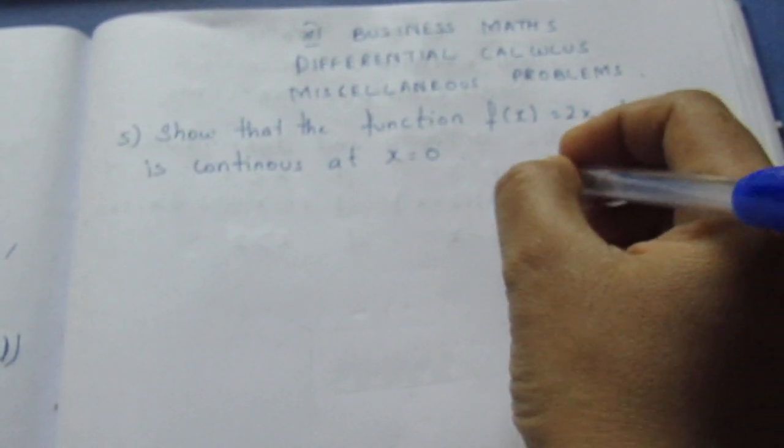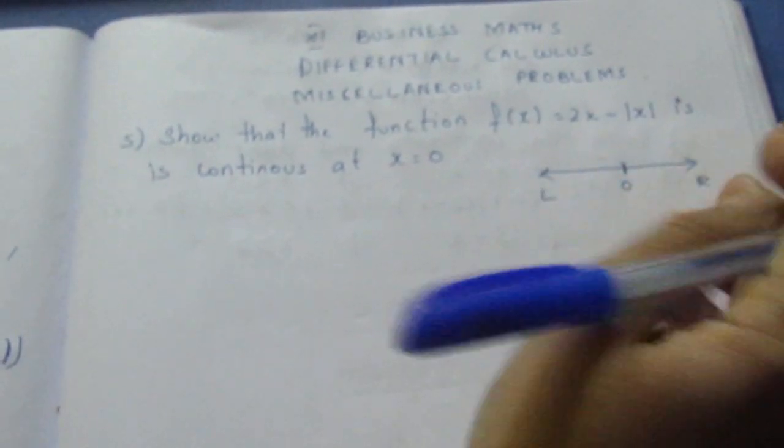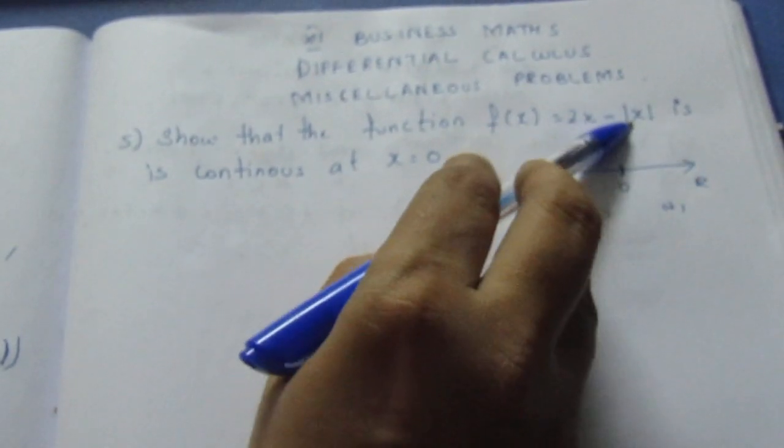At x = 0, we check left hand side and right hand side. Let's see where x is negative and positive. So |x| is equal to...